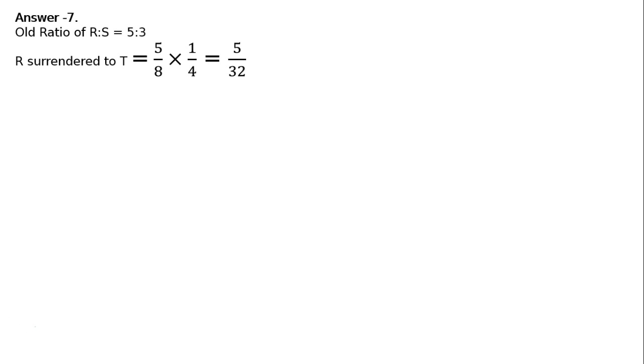R surrendered to T. That is 5 by 8 is the old share and multiplied by one-fourth. He surrendered one-fourth of his share to T. Of means multiply. That is one-fourth of 5 upon 32. Hence, R surrendered 5 upon 32 to T.